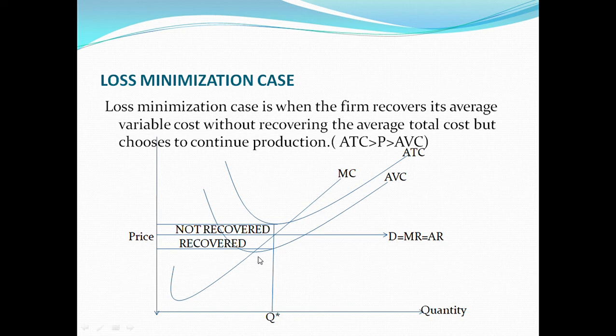There's every possibility that on my next production process I'm going to recover this deviation from the average variable cost to average total cost before I can earn economic profits. However, the firm chooses to stay in business because there's every tendency for it to regain its loss.